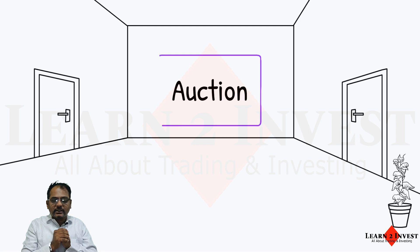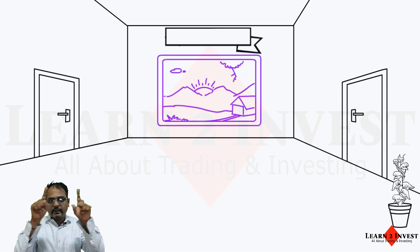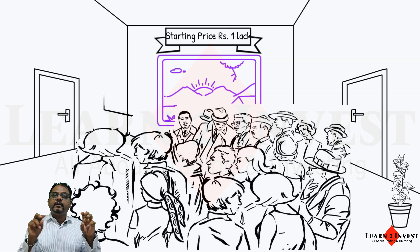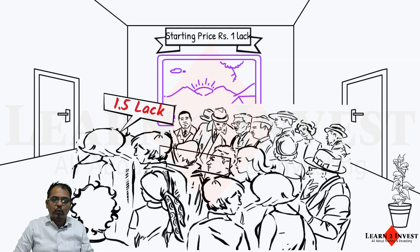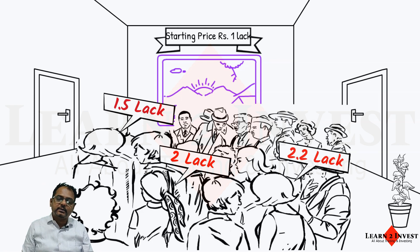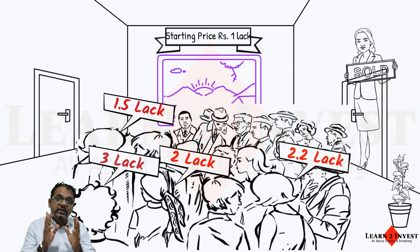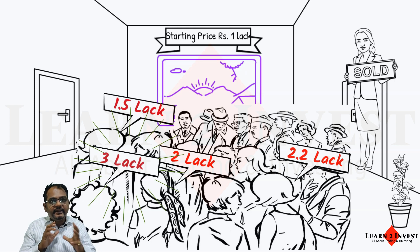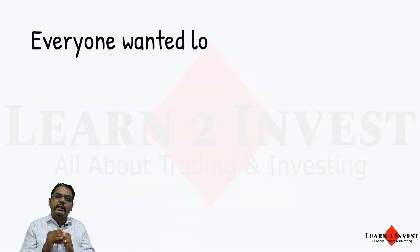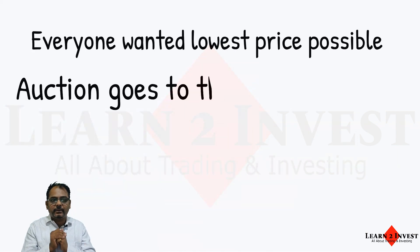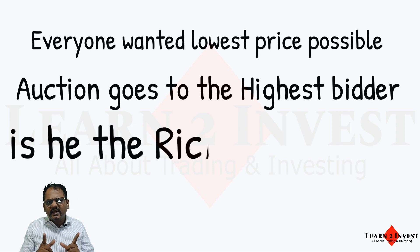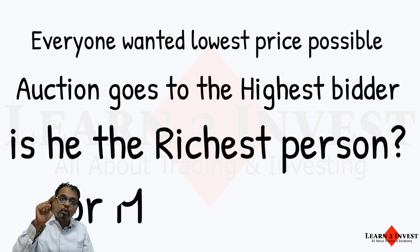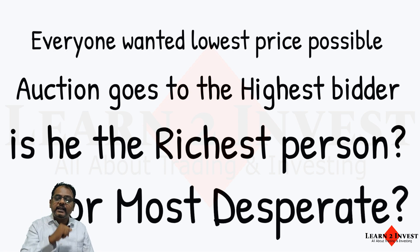Let's talk about options. Let's say you have gone to an auction where they are trying to sell a beautiful picture. The starting price is set at 1 lakh. The first person says 1.5 lakh, the second says 2 lakh, the third says 2.2 lakh, and then you raise your hand and say 3 lakh. There are no more bidders, so the option goes to you — you get to buy it. Everyone wanted the lowest price possible, but the option went to the highest bidder. Is he the richest person? No, he is the most desperate. The most desperate person has got this option.